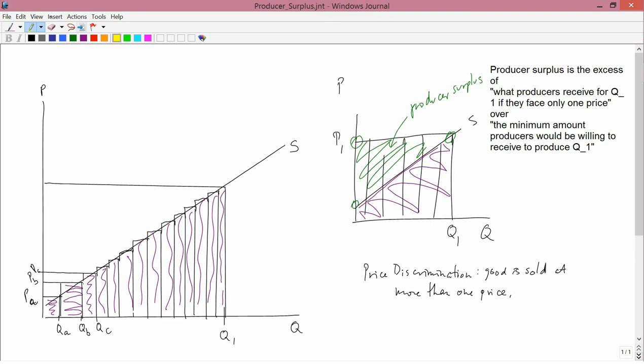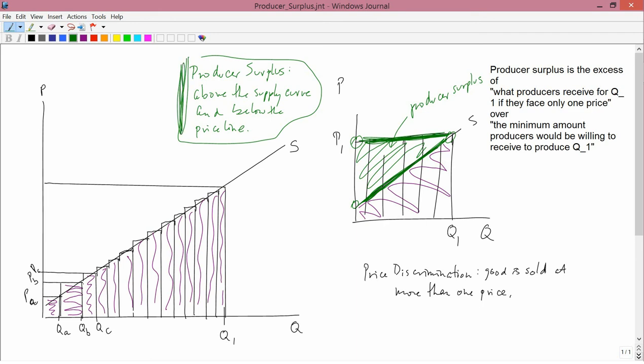So finally, let's summarize that producer surplus from the graph here is the area above the supply curve, and below the price line. So it's important to remember the definition of producer surplus that I typed on the right, but it's also quite important to know the way to pick out producer surplus in a graph. So the way to pick out producer surplus in a graph is this. It's the area above the supply curve and below the price line.